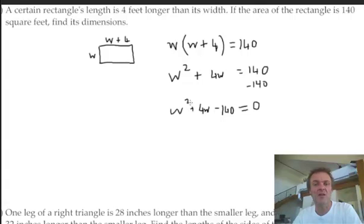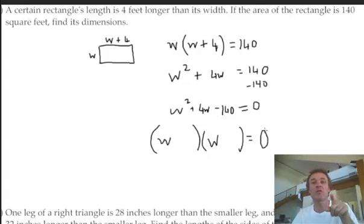So I'll write it on the left. So again, what's two numbers? Here we go again, big numbers. Two numbers that make negative 140 when you multiply that make positive 4 when you add. W, W. Remember, one's going to be plus and one minus. Here we go again.